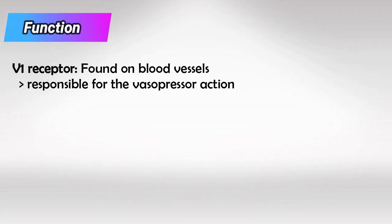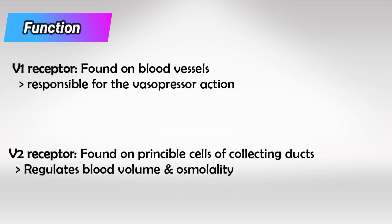ADH works on two main receptors. The V1 receptor is found in blood vessels and causes vasoconstriction. V2 receptors are found in the principal cells of the collecting duct and cause hypervolemia. So basically, V1 causes vasoconstriction and hypertension, and V2 increases blood volume.